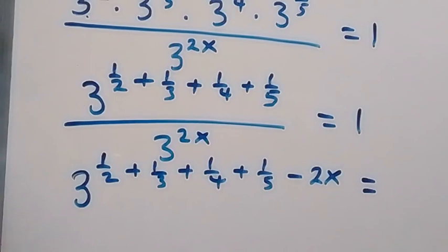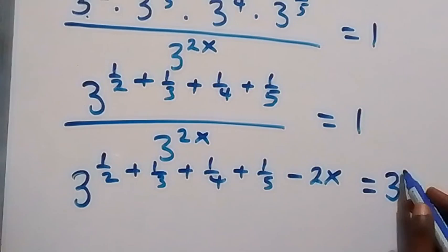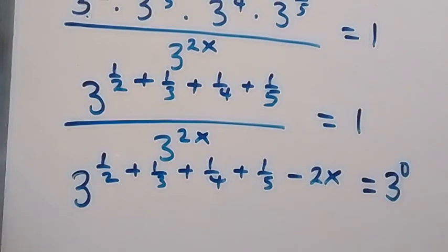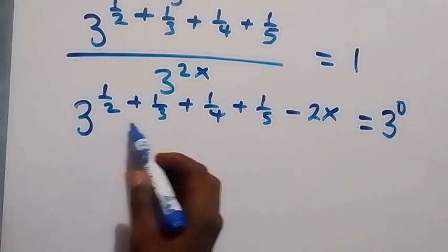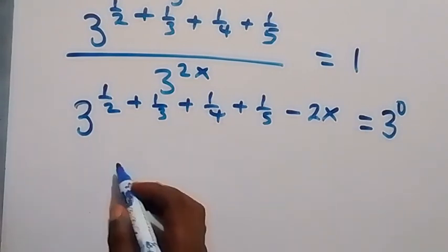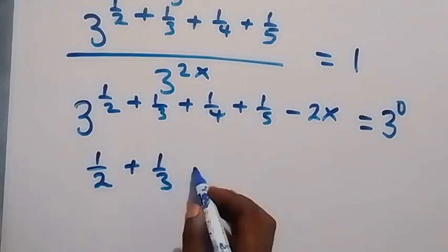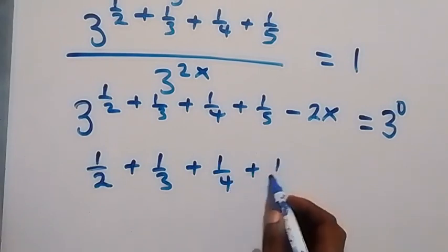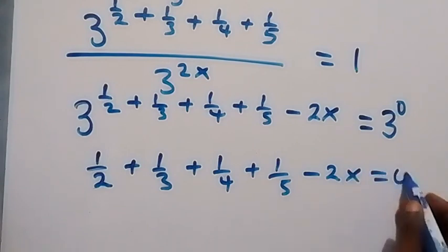Let's change 1 to a number in base 3. We can say 1 equals 3 raised to power 0, since any number to the power 0 is 1. Since we now have the same base on both sides, we can equate the powers: 1/2 + 1/3 + 1/4 + 1/5 minus 2x equals 0.